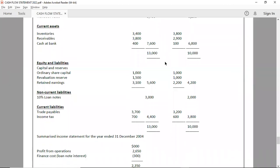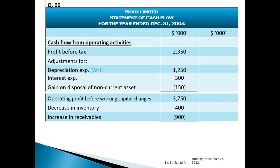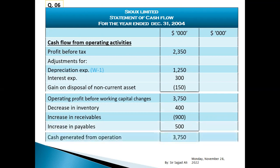Current liabilities: trade payables opening balance three thousand two hundred, closing balance three thousand seven hundred. Cash generated from operations three thousand seven hundred fifty. Cash generated from operations — interest paid.